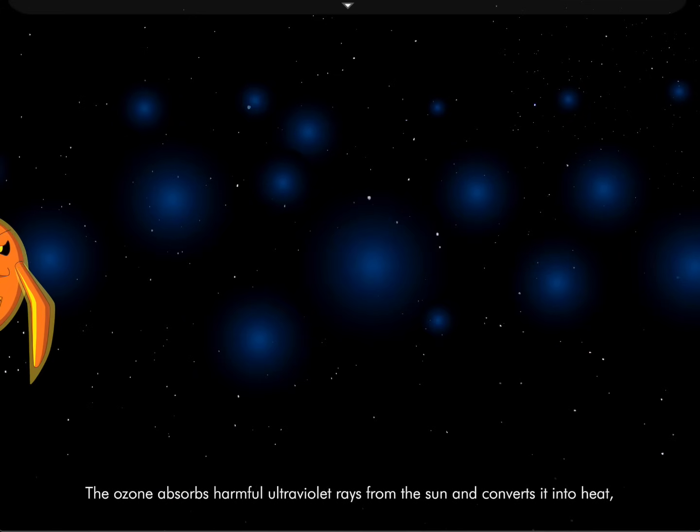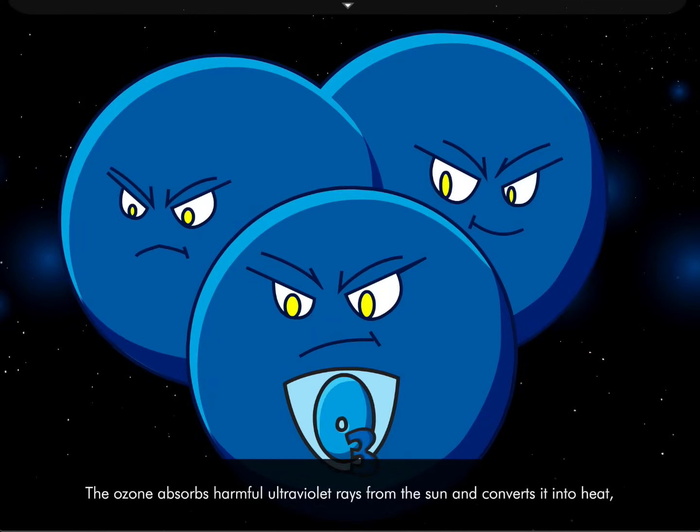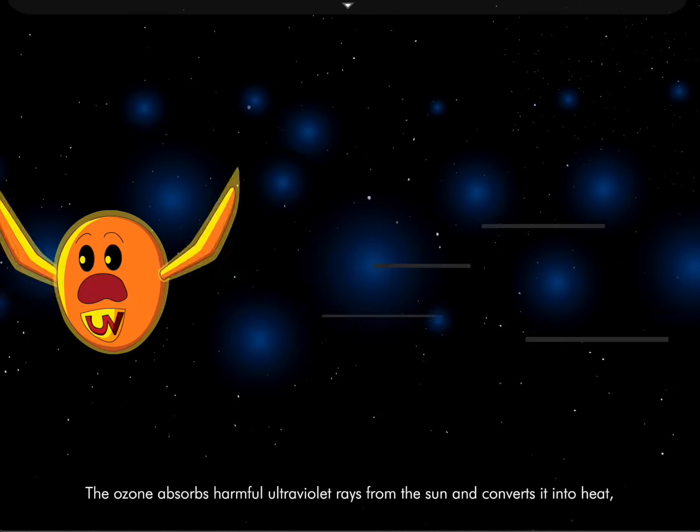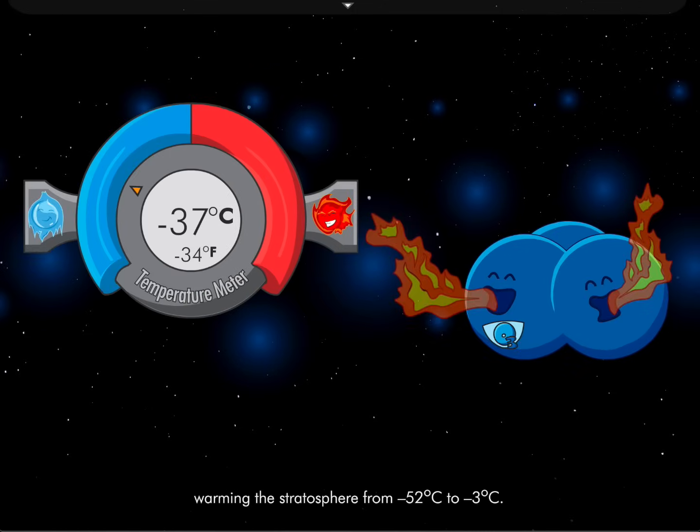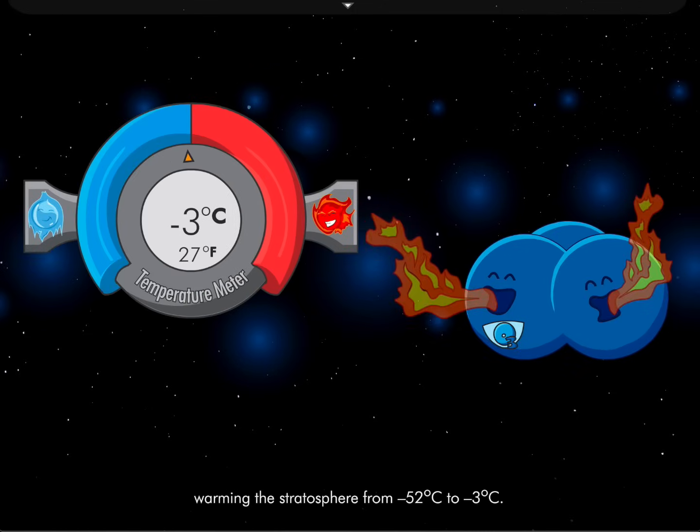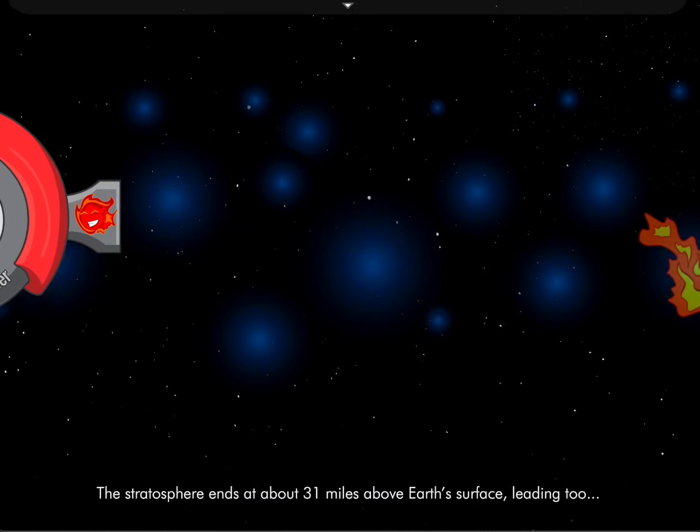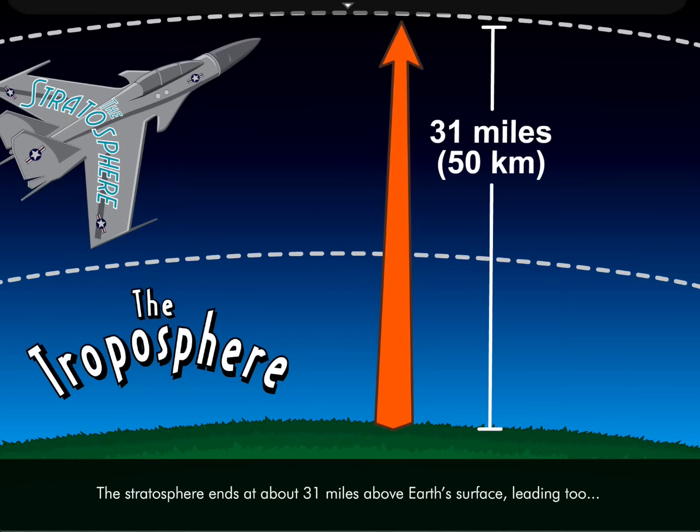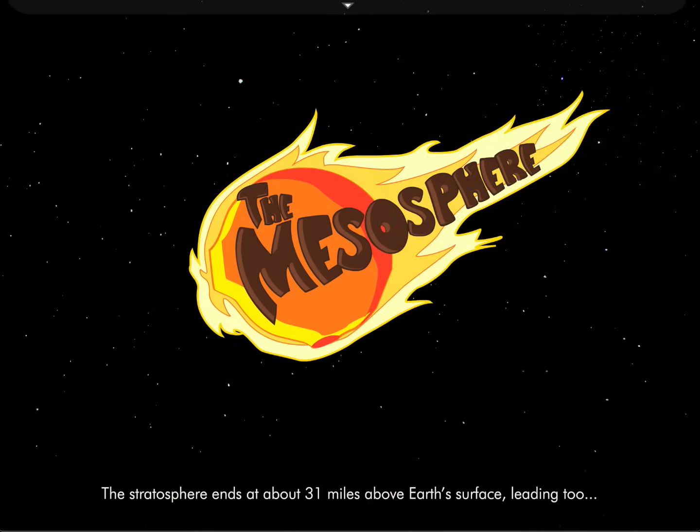The ozone absorbs harmful ultraviolet rays from the sun and converts it into heat. This warms the stratosphere from negative 52 degrees to negative 3 degrees. The stratosphere ends at approximately 31 miles above the earth's surface leading to the mesosphere.